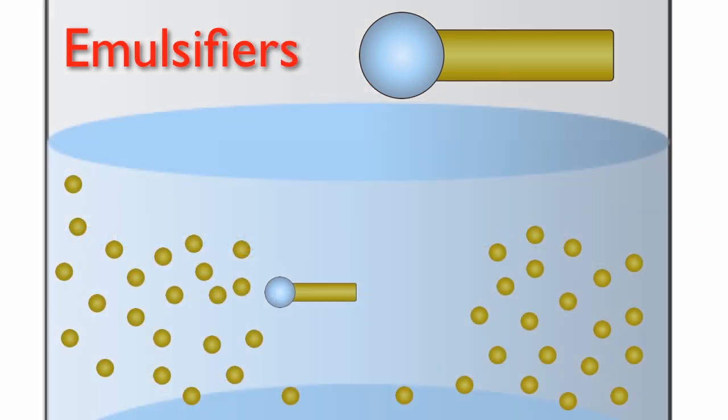If we added lecithin to our original oil and water emulsion, its hydrophilic head will prefer to associate with water and the hydrophobic tail with the oil droplets. This prevents separation and thus stabilizes the emulsion.